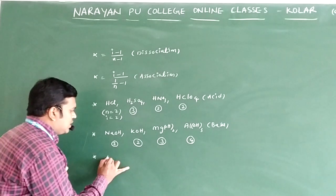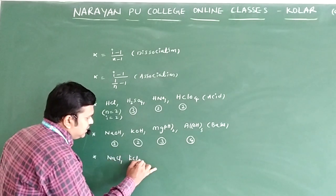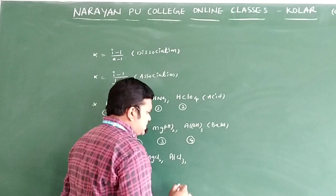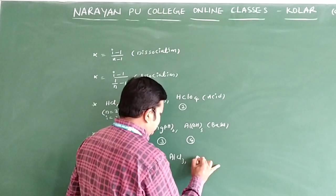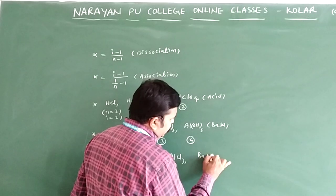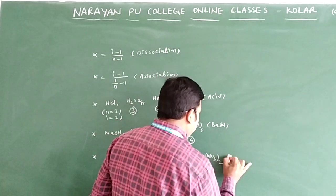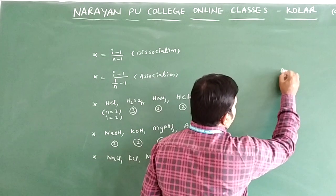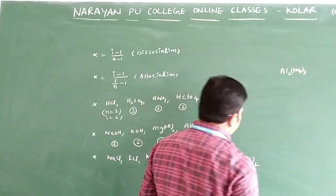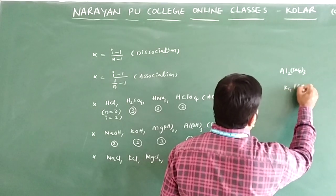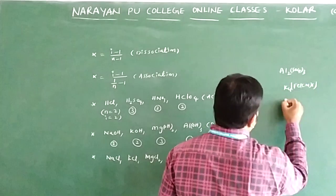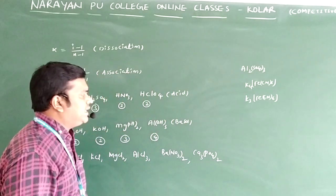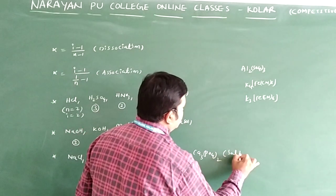Now let's look at examples for salts. Examples include NaCl, AlCl₃, barium nitrate, calcium phosphate, aluminum sulfate Al₂(SO₄)₃, K₄[Fe(CN)₆], and K₃[Fe(CN)₆]. All these are examples of salts that undergo complete dissociation, where the number of ions equals the van't Hoff i value.